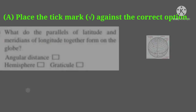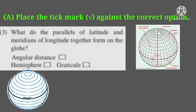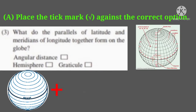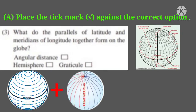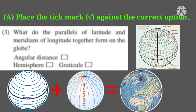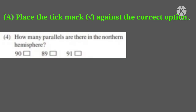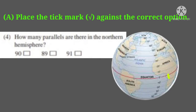Third question: what do the parallels of latitude and meridians of longitude together form on the globe? Options are: angular distance, hemisphere, and graticule. The correct answer is graticule.